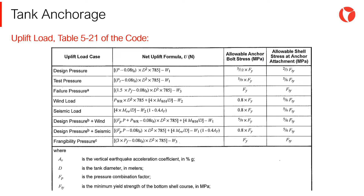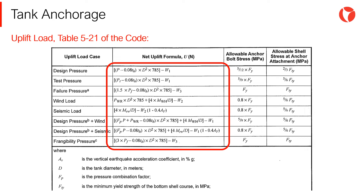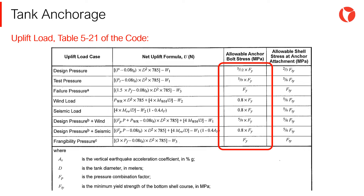The uplift load is calculated according to table 521A of the code, which is shown on the screen. Once the real load on each bolt is calculated, it is compared with the anchor bolt allowable stress obtained according to the table shown. This way the diameter and number of bolts preventing the tank from uplifting are selected.